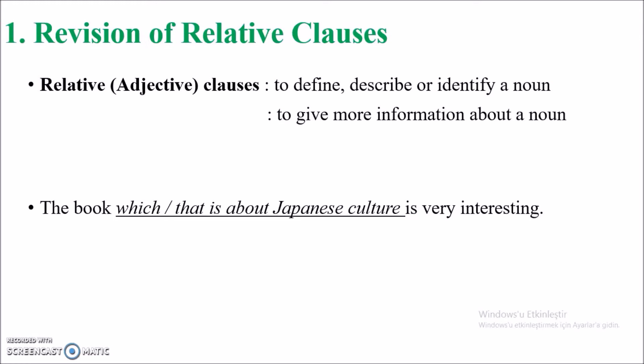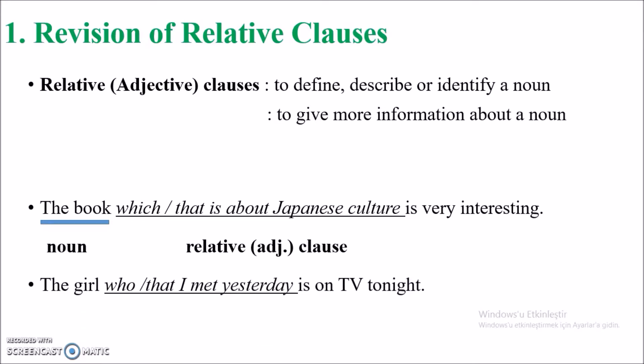When we look at this sentence, 'the book' is our noun, and in order to give more information, describe, or define this noun, I am using a relative clause or an adjective clause. Relative clause and adjective clause are the same thing. In the second sentence, 'The girl, who I met yesterday, is on TV tonight' — the relative clause 'who I met yesterday' is defining and giving more information about the noun 'the girl'.